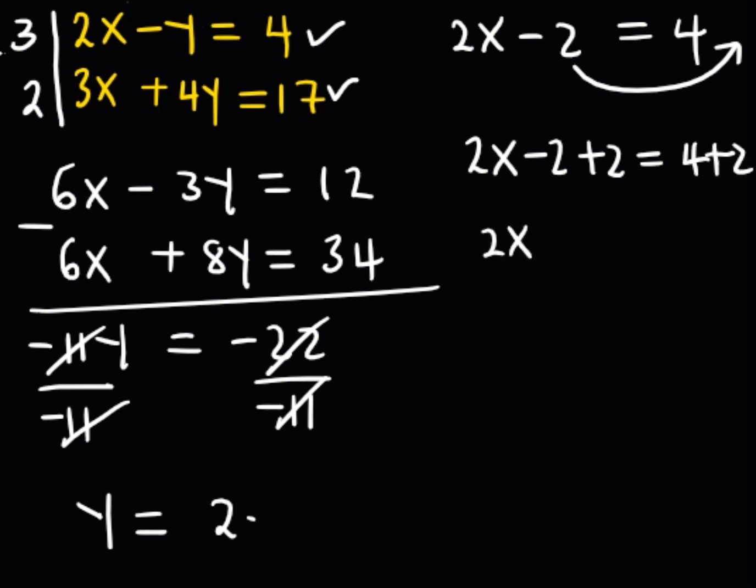Implying that 2x is equal to, remember this vanishes to 0, so 4 plus 2, I obtain 6. I divide both sides by 2. Implying that the value of x is equal to 3.